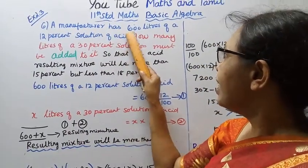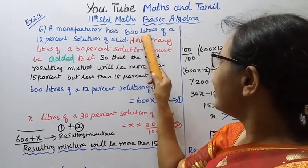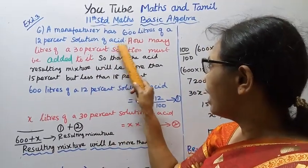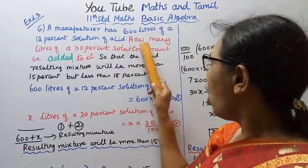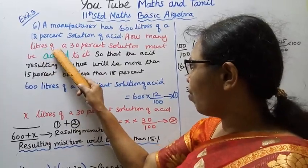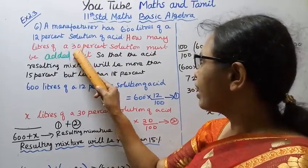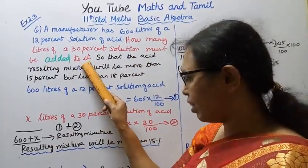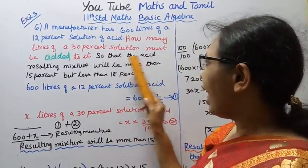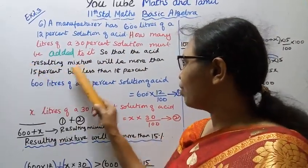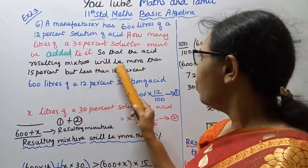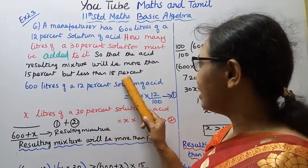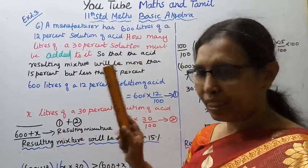A manufacturer has 600 litres of 12% solution of acid. How many litres of 30% solution must be added to it so that the acid content of the resulting mixture will be more than 15% but less than 18%.